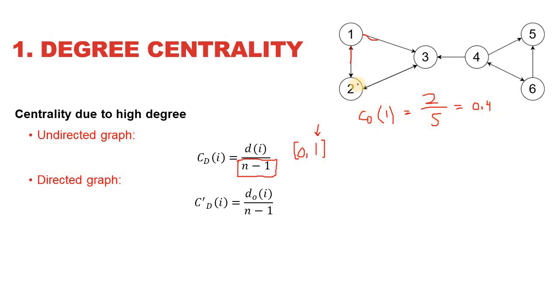The degree centrality of node 2 is also going to be 0.4 because it has a degree of 2, while n is going to be 6.